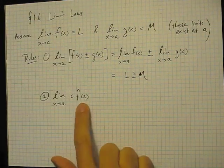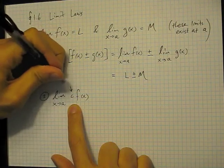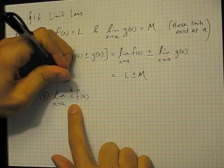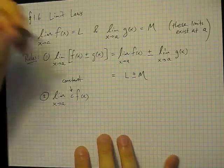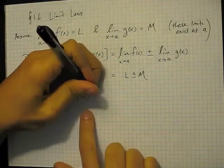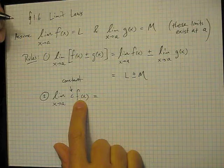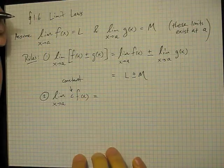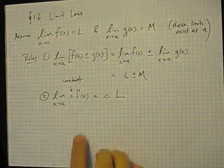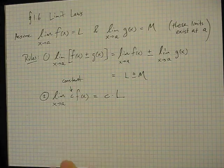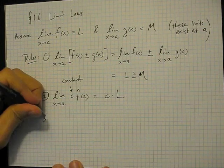In this case, c is a constant. The law for calculating the limit of a constant multiplied by a function is: you just take the constant and multiply it by the limit of the function.